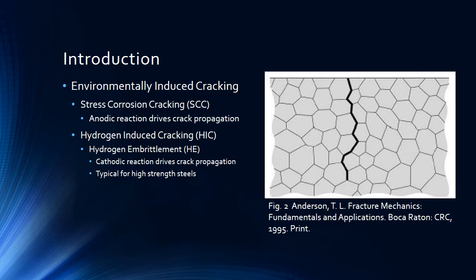Often times, all forms of environmentally assisted cracking get summed into one phrase called stress corrosion cracking. However, stress corrosion cracking is a specific mechanism of crack propagation of environmentally induced cracking.